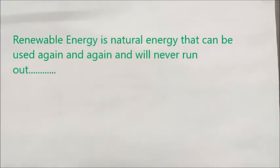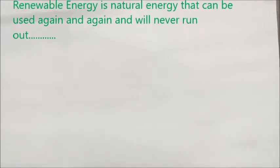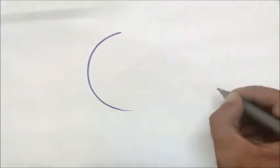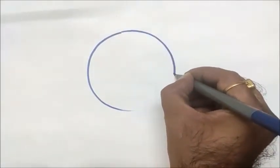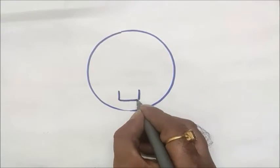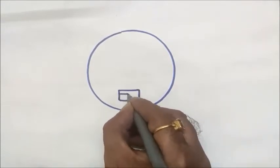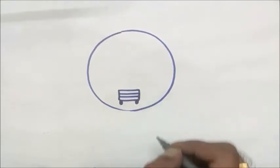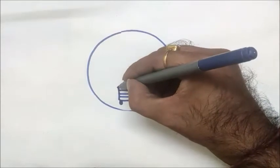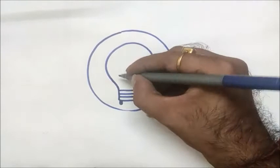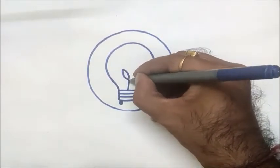Its name is Renewable Energy. Here one circle, one straight standing line, one slipping line, one more slipping, few slipping inside, and here I am going to make it a bulb. And here a small plant.